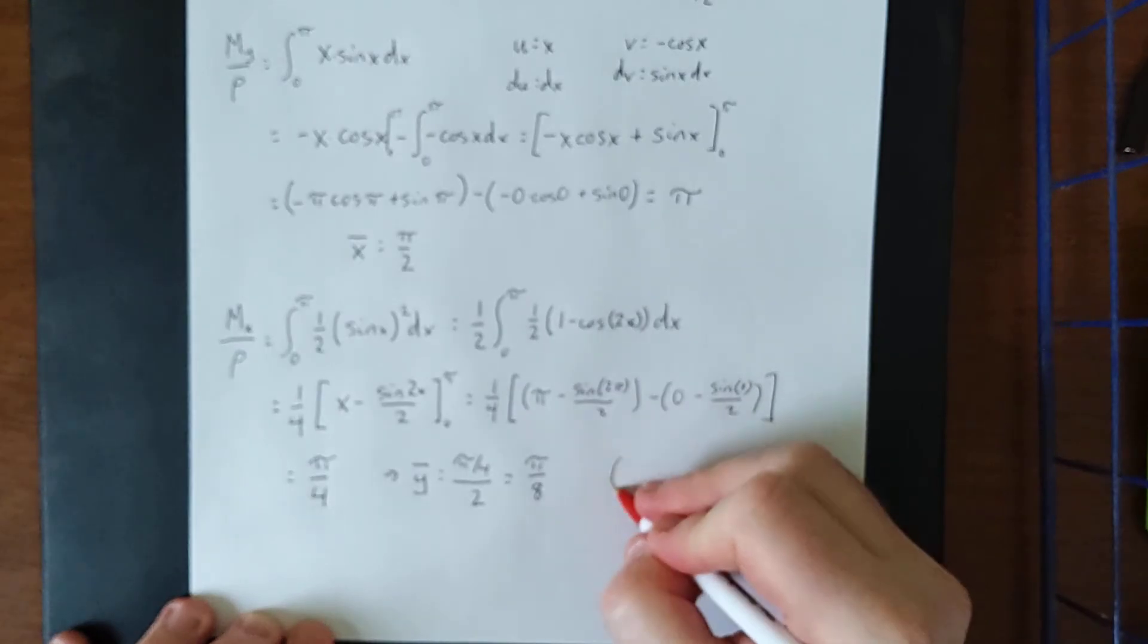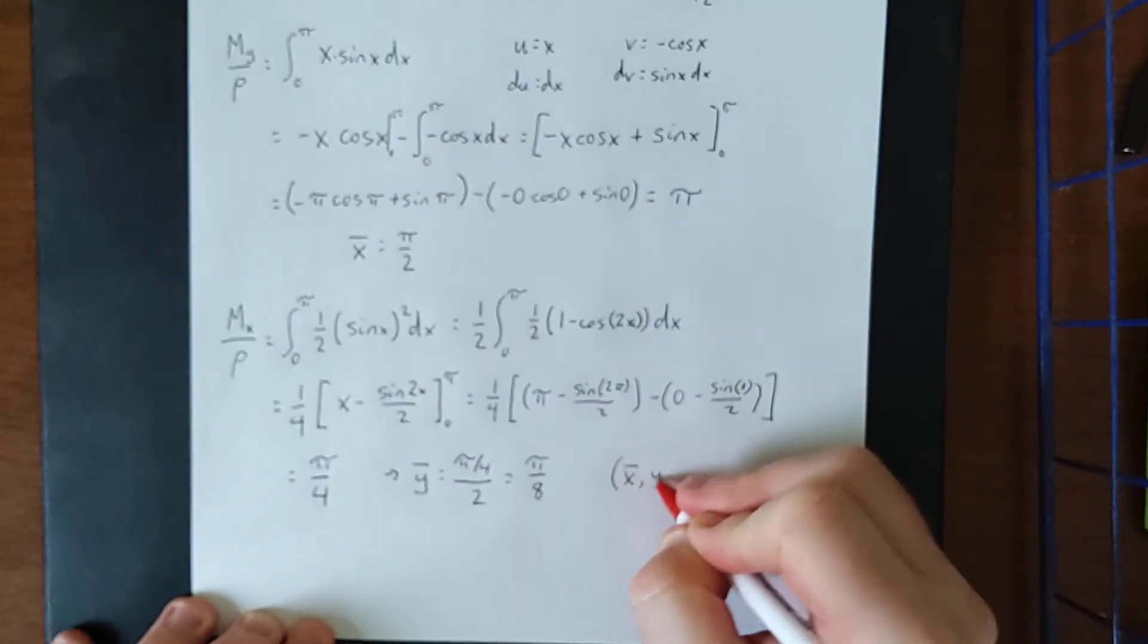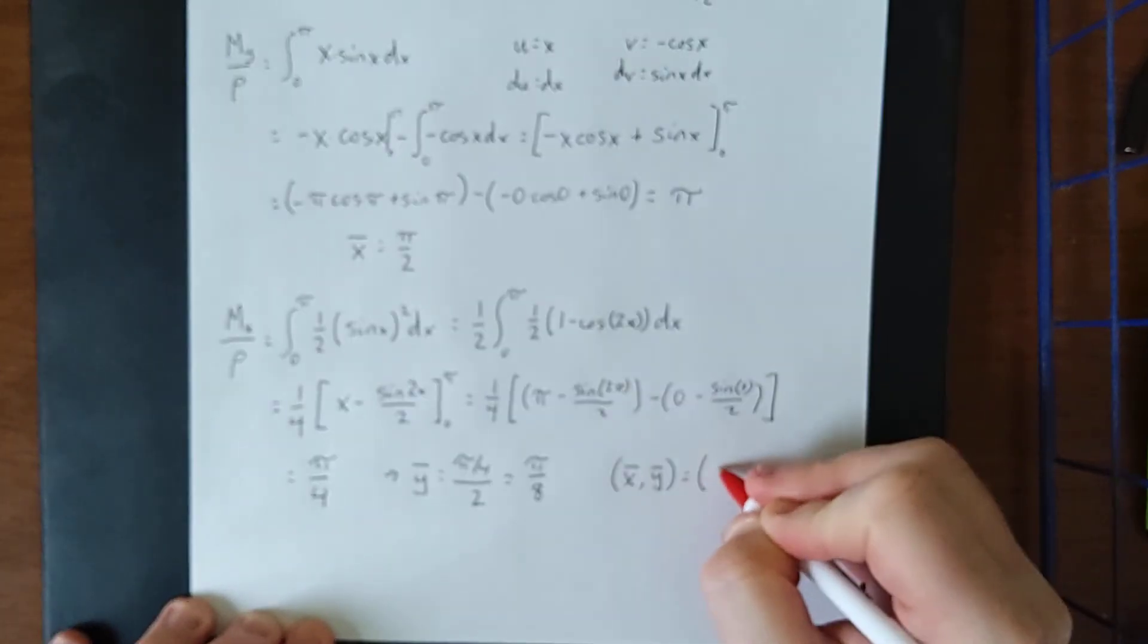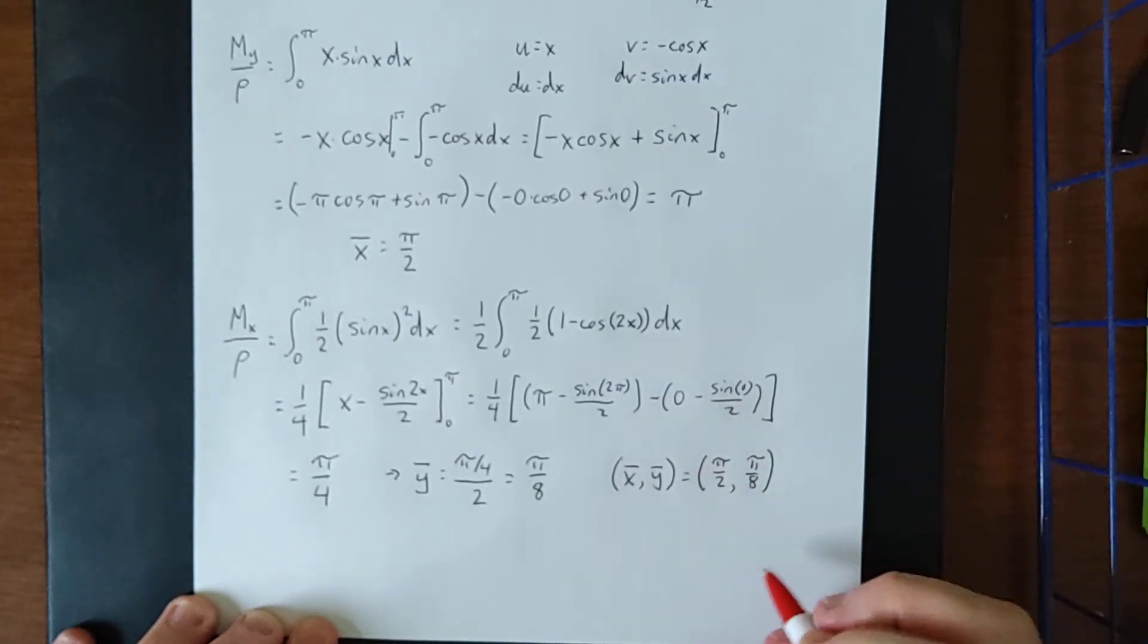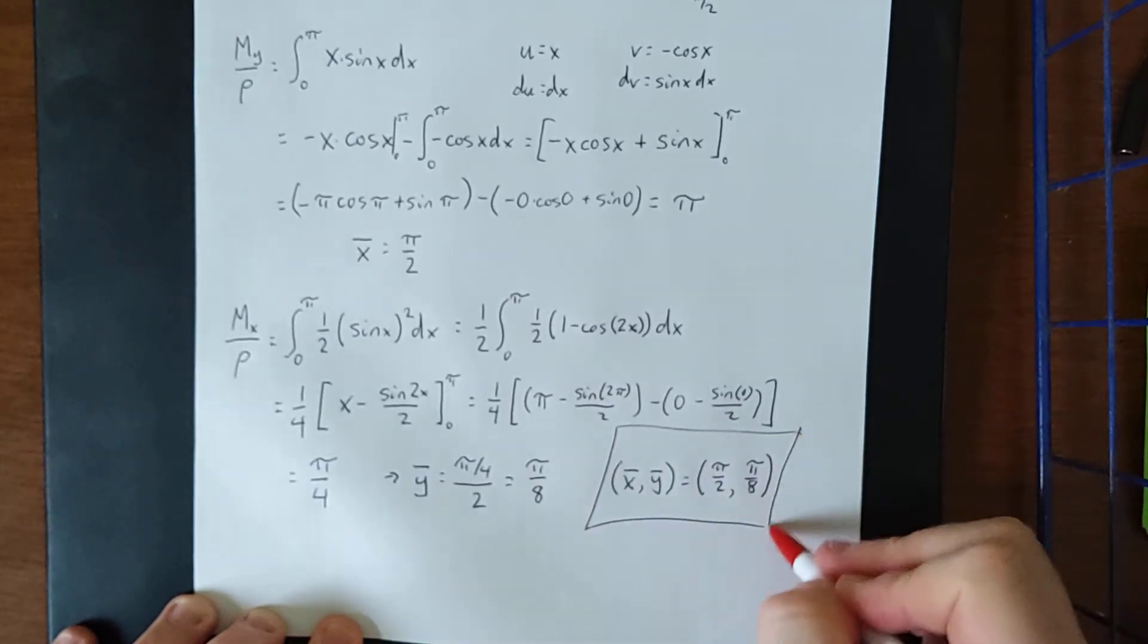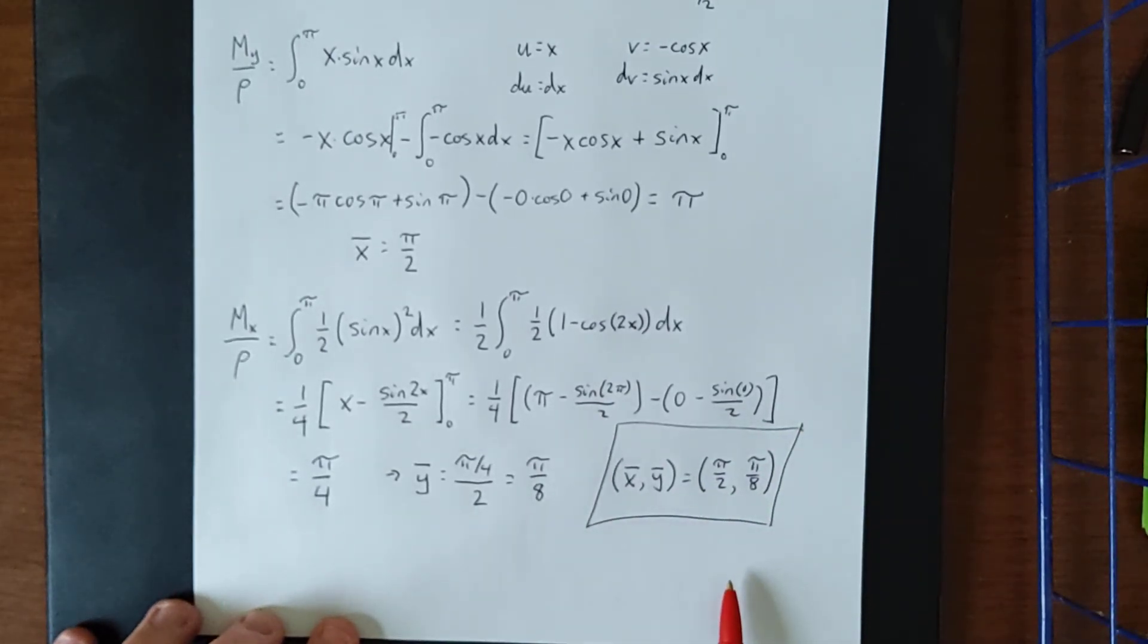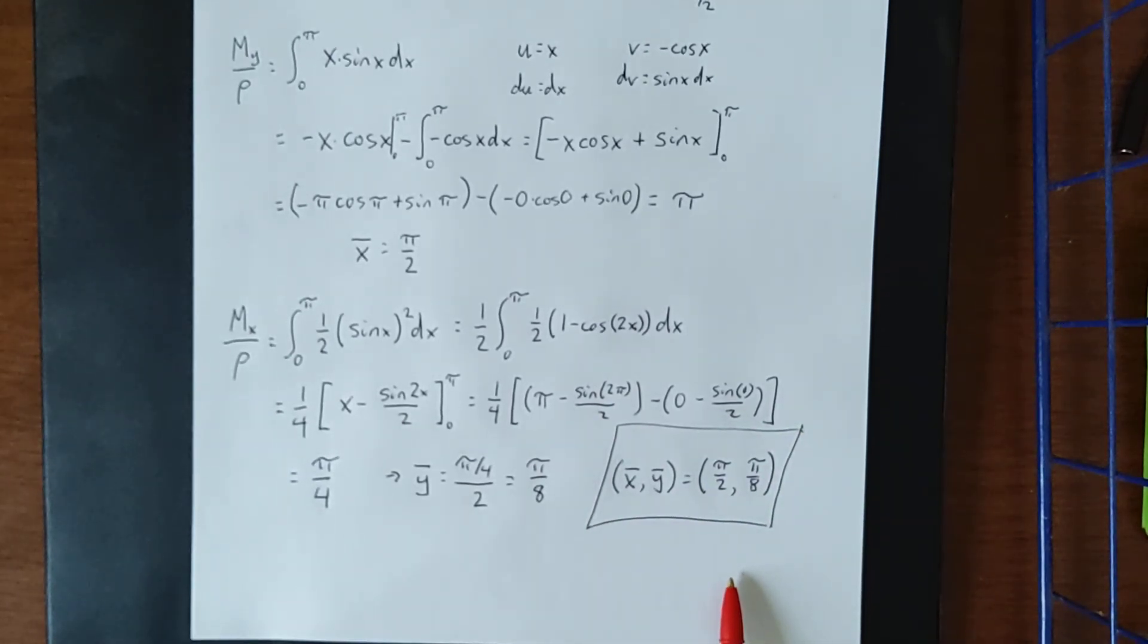So center of mass for this region is going to be the ordered pair, pi over two, comma, pi over eight. Hopefully that's in focus enough for people to have been able to follow along.